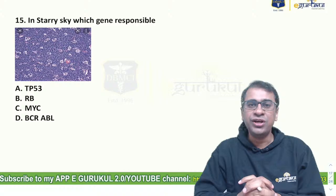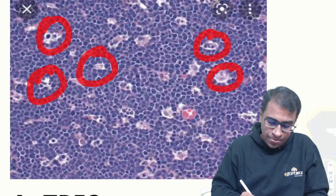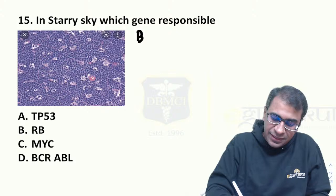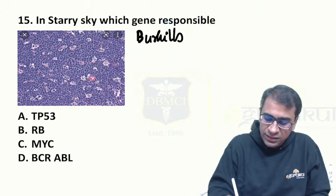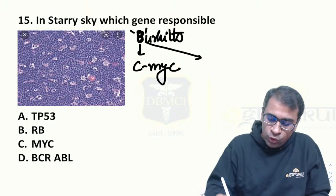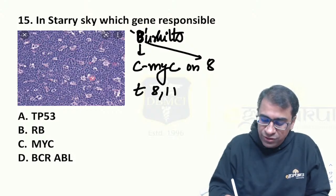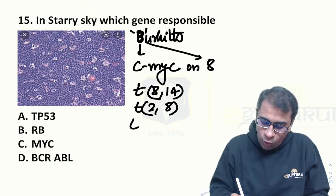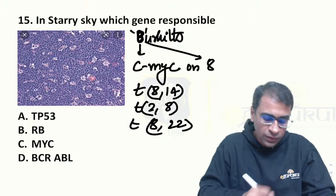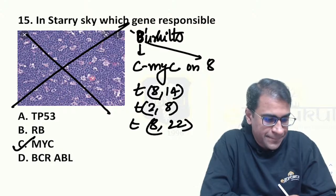Starry sky appearance — the gene responsible. This is Burkitt lymphoma. In the image, the macrophages appear as stars against a background of tumor cells. Remember: Burkitt — B looks like number 8 — CMYC is on chromosome 8. The translocation is 8 with 14 (most common), and can also be 2 with 8 or 8 with 22. The answer is CMYC positivity.